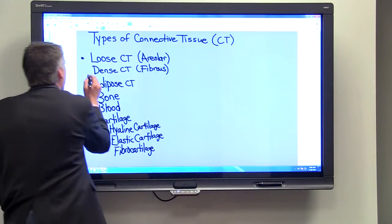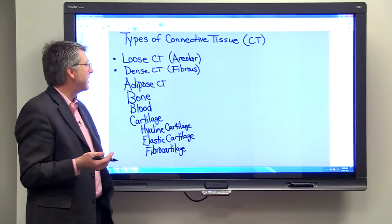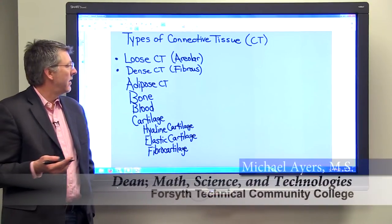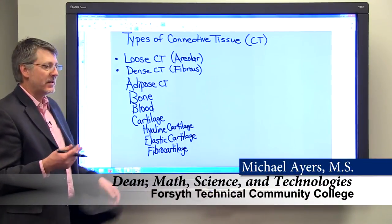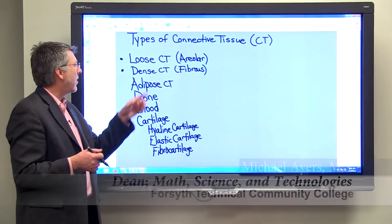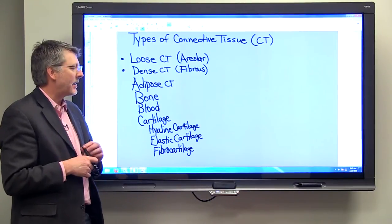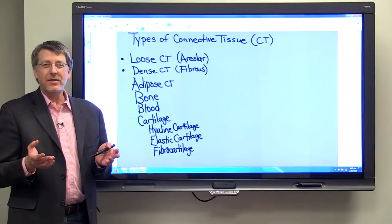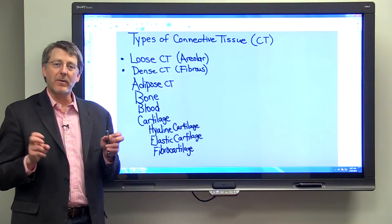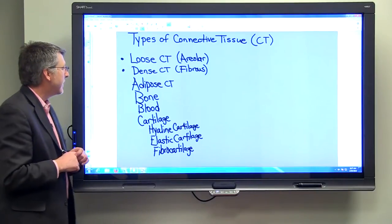A sharp contrast to loose connective tissue is dense connective tissue, also called fibrous connective tissue. It's made out of a lot of really tough collagenous fibers and is densely packed together. You know about dense connective tissue if you've ever gotten a chicken McNugget that contains what my grandmother would call gristle — that's dense connective tissue, and you know how tough that is.